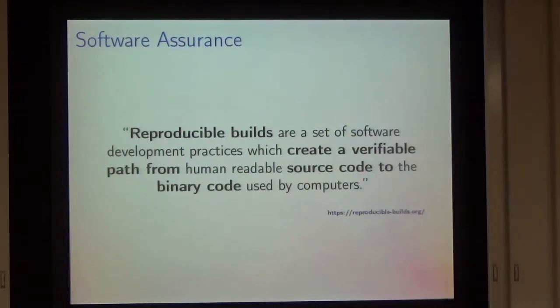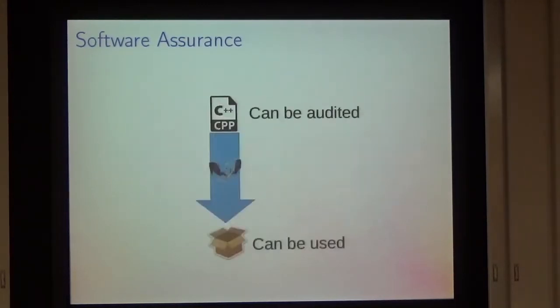I'll briefly touch on some of the recent interest in reproducible builds from the security and software assurance perspective. This is another quote from the reproducible builds website. The key here is that we can audit the source code. We can read the source code and look for vulnerabilities, make sure it performs what we want. It's very difficult to inspect the binary in a similar way. What it means is that this compilation process, this build process, we kind of have to trust it in order for the auditing we've done on the source code to have claims that we can make about the binary we're going to run.